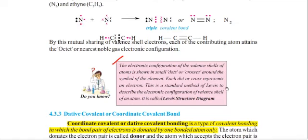This is the standard method of Lewis to describe the electronic configuration of valence shell of an atom. It is called Lewis Structure Diagram, which is called Lewis Structure Diagram. Element and Atom, dot and cross, the valence shell of electron is called Lewis Structure Diagram.